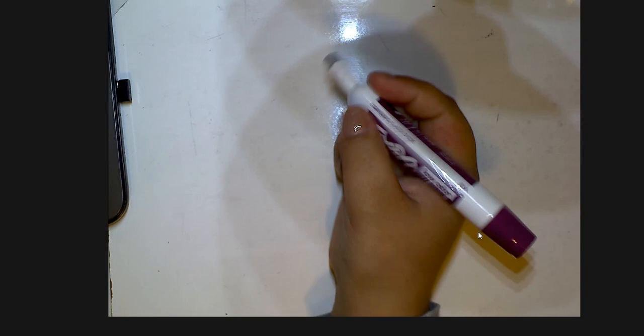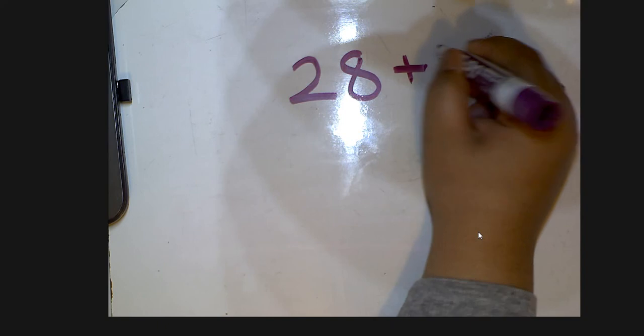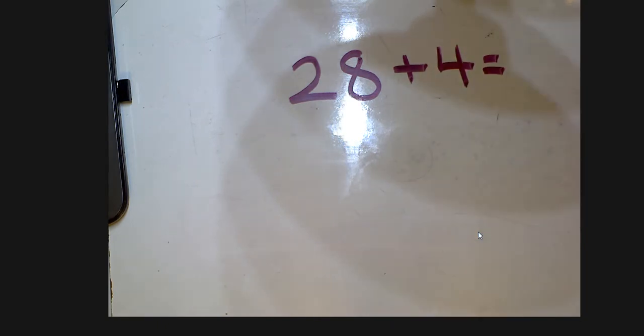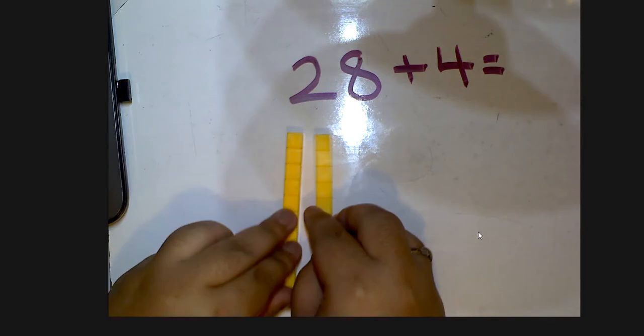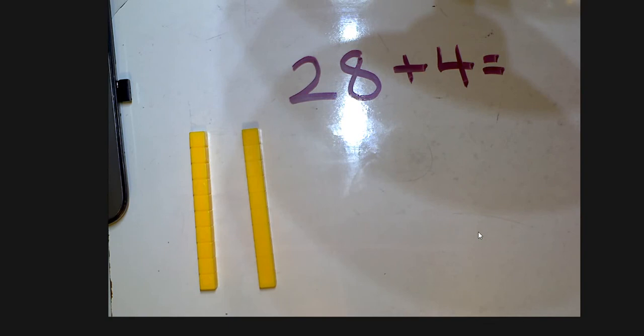So for example, we'll do 28 plus 4 — we'll start there. I'm gonna model first: 28 has two tens and eight ones — two, four, six, eight. Okay, so I have 28 there.